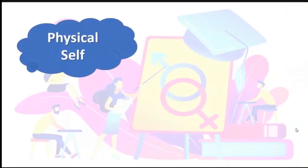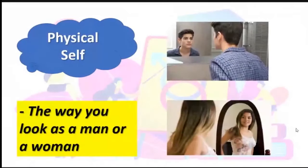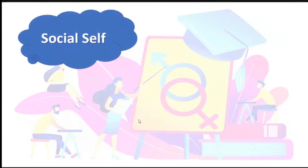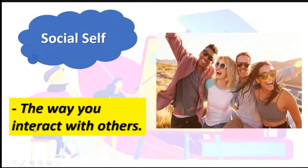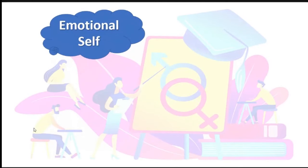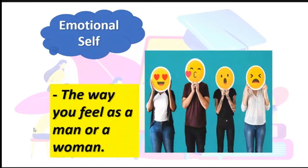Take note of the keywords for each factor. The physical self is the way you look physically as a man or a woman. The mental self is the way you think as a man or a woman. The social self is the way you interact or communicate with other people — socialization, how you mingle with others. The emotional self is the way you feel as a man or a woman.